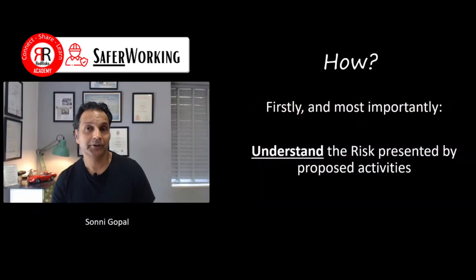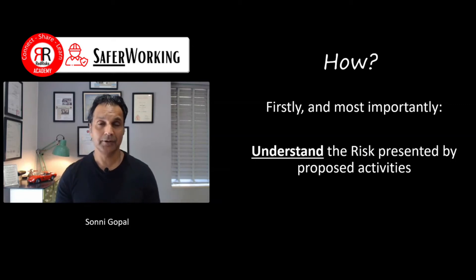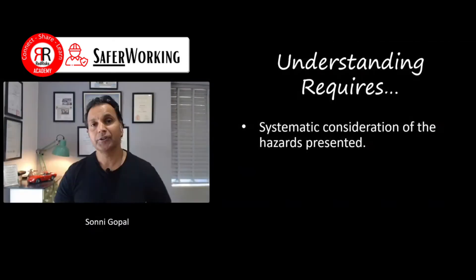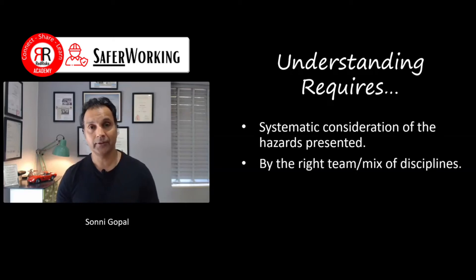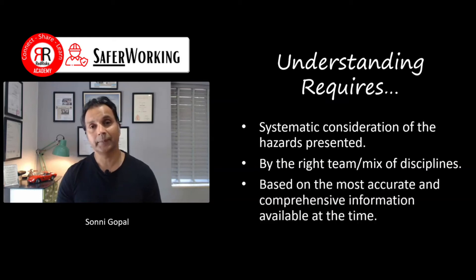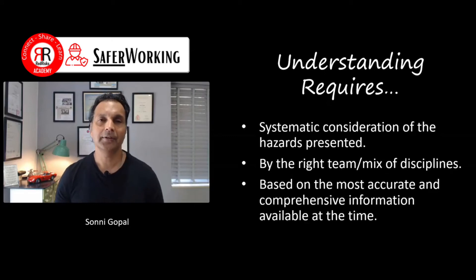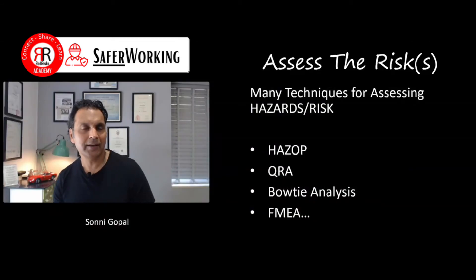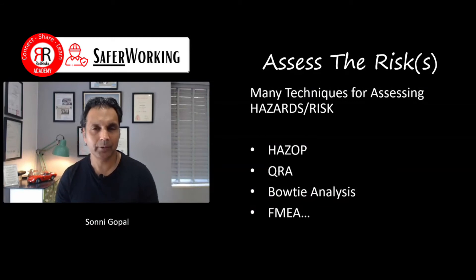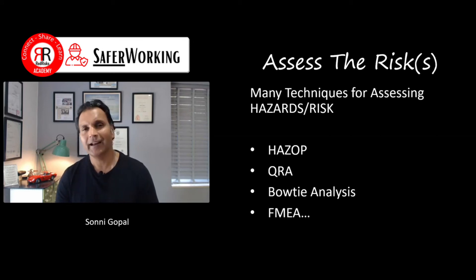But how do we do that? Firstly and most importantly, we need to understand the risks presented by our activities within the organization. Understanding those risks requires a systematic consideration of hazards, examined by the right team from a mix of discipline perspectives, based on the most accurate and comprehensive information available at the time. There are many techniques for assessing risks — typical examples include HAZOPs, QRAs, bow tie analysis, and failure mode effect analysis. There's a whole range of them, but it's important to pick wisely.